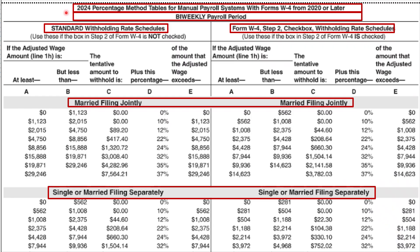This is what the percentage method table looks like. The first header line shows the 2024 percentage method tables for manual payroll systems with Forms W-4 from 2020 or later. Be sure that you're using the correct year — for this class, you need to use the 2024 percentage method tables. Double check that you're using the table for the correct payroll period; this table is for biweekly payroll periods. The table splits into a left section for the standard withholding rates and the right side for the Form W-4 Step 2 checkbox withholdings.